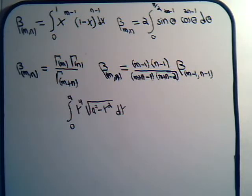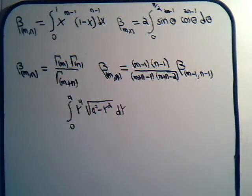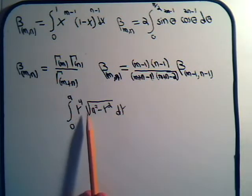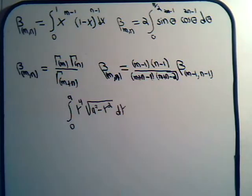Can we find a substitution, or maybe a series of substitutions, that will transform this into a beta function? Before we ask that question, let's get what's inside the square root sign into the form 1 minus some variable, and then see how to proceed from there. So we'll factor the a squared out.